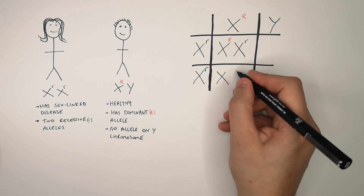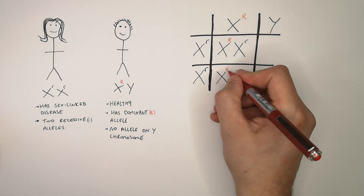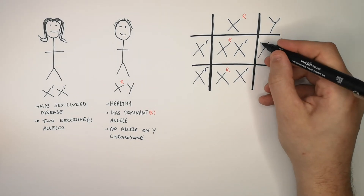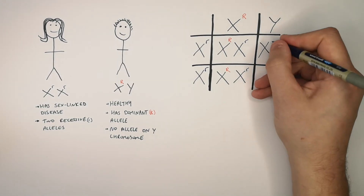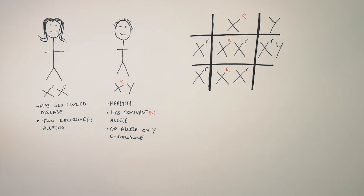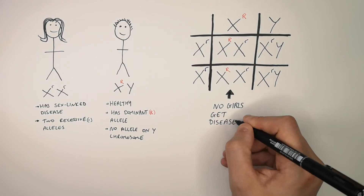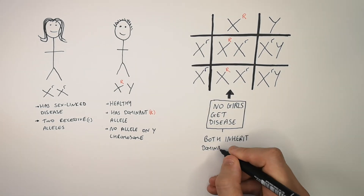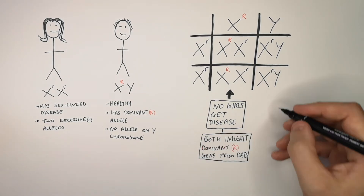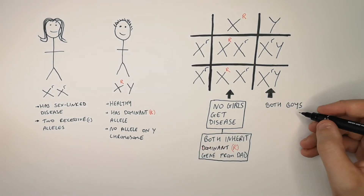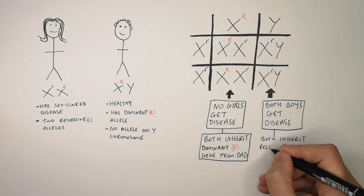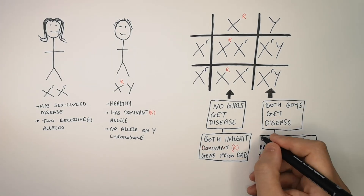The second child will also be a girl, XX, inheriting the dominant allele from dad and the recessive allele from mum. The third child will be a boy, XY, receiving the small r allele from mum and no allele from dad — he will have the disease because only one recessive allele is required. The fourth child will also be XY, a boy, inheriting the recessive disease allele from mum. So no girls can get the disease — both girls inherited the dominant big R gene from dad.